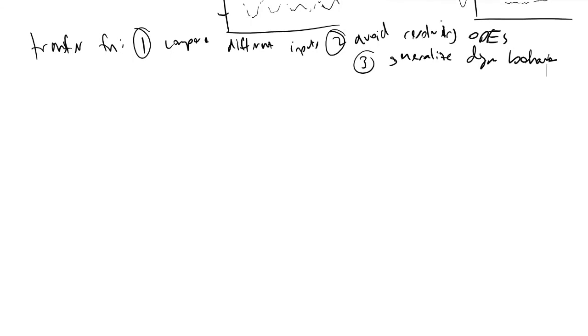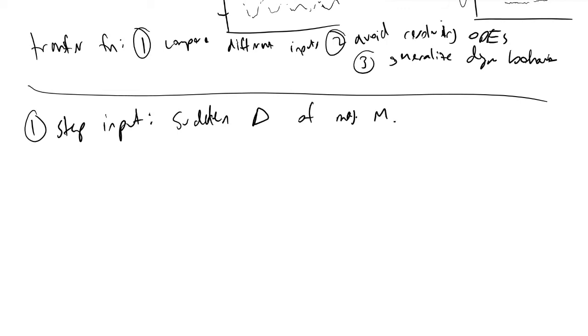Step inputs are characterized by a sudden change. It's also a permanent change of magnitude M in one of your inputs. For example, if we had some kind of mixer and we immediately changed the concentration in one of the two input inlet streams to a new concentration, the step input would be the magnitude of that change - the new concentration minus the old concentration in the stream you're changing.